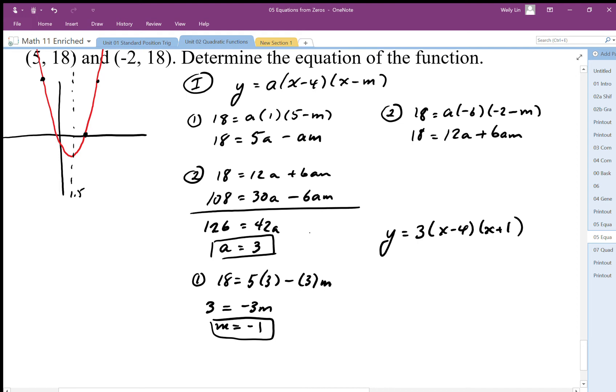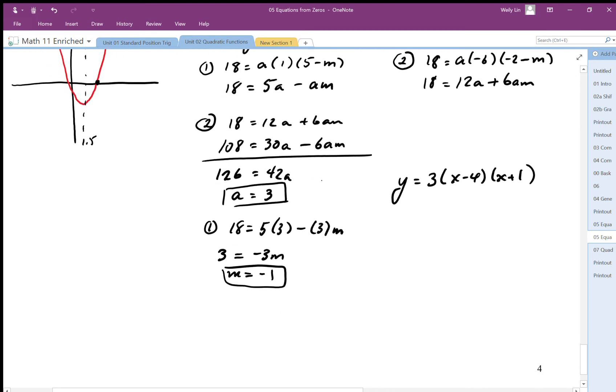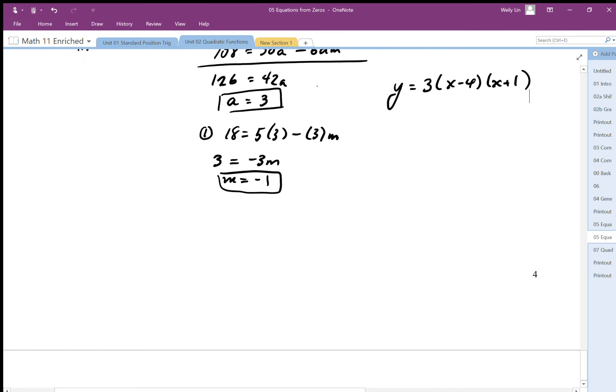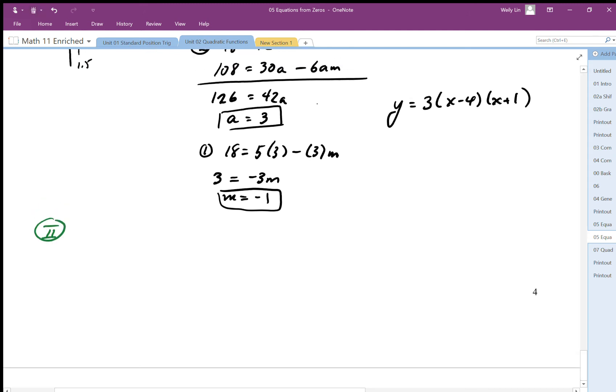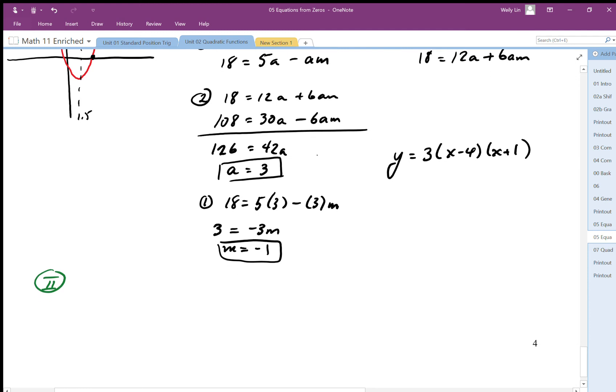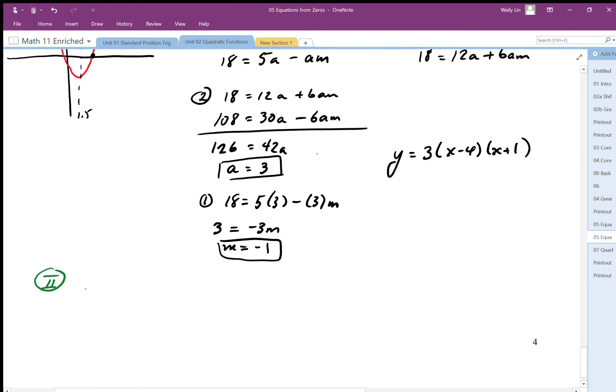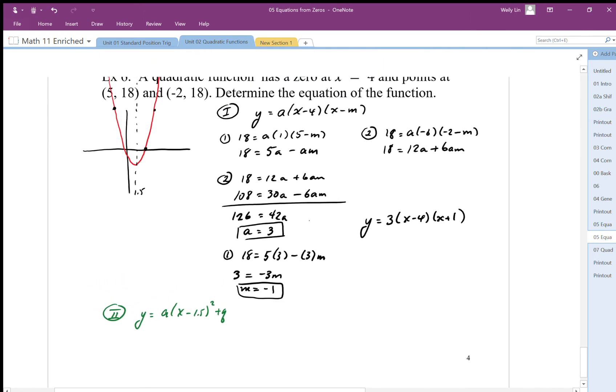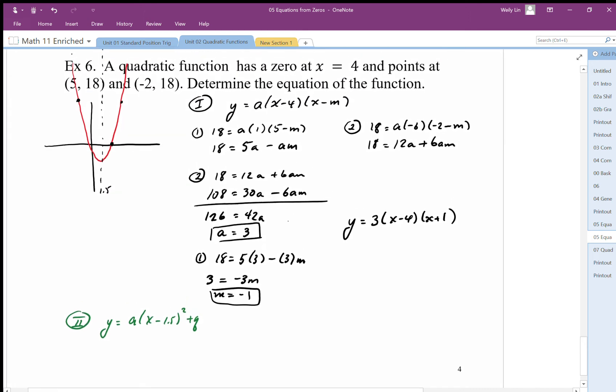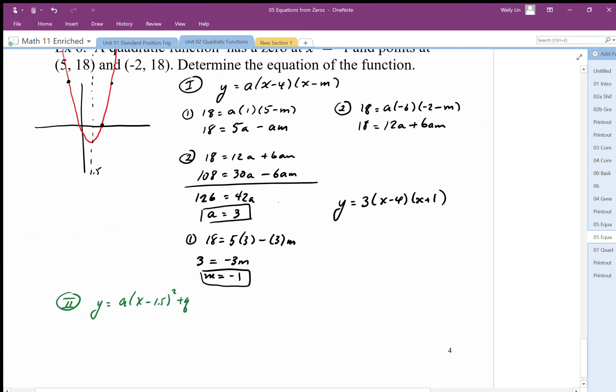That's one solution. I can also set this up knowing the vertex. I do know my vertex is at 1.5, that's all I know. So I have y equals a(x - 1.5)² + q, and I can plug in my zero to get my one equation.